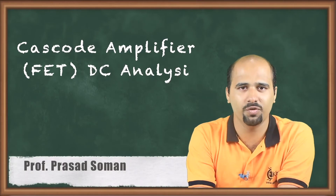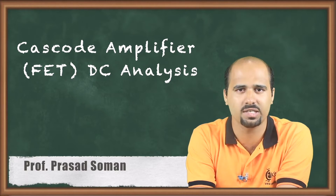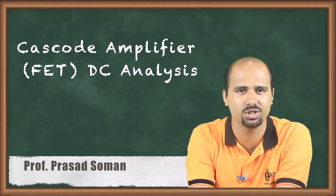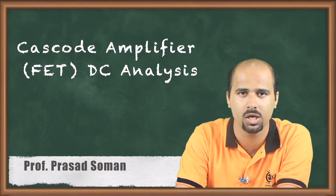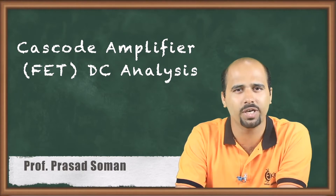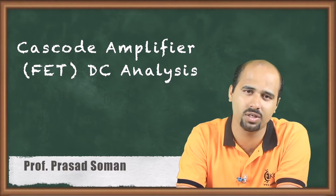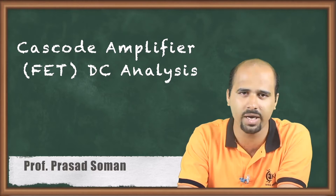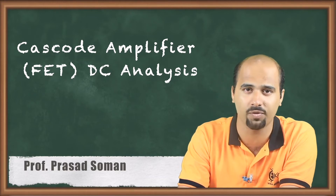In this video we will learn the cascode amplifier with different kinds of transistors, that is field effect transistors. We can use the JFET (junction field effect transistor), MOSFET (metal oxide semiconductor field effect transistor), either depletion type or enhancement type. Even if you take FET as a whole, whether JFET or MOSFET, you will get the same result. Let us have a look at the circuit of the cascode amplifier with FET.